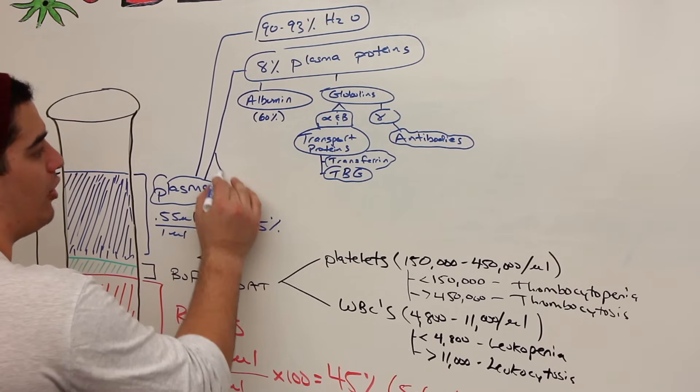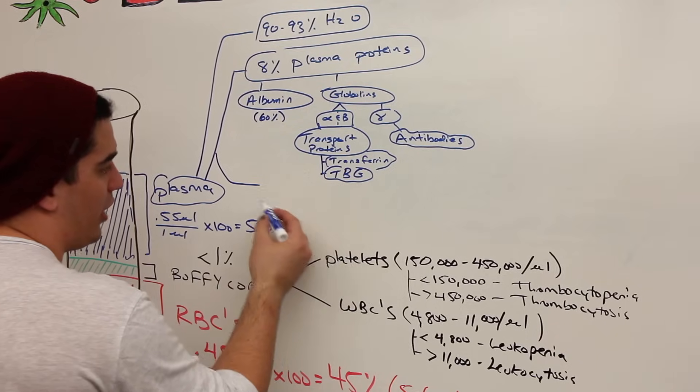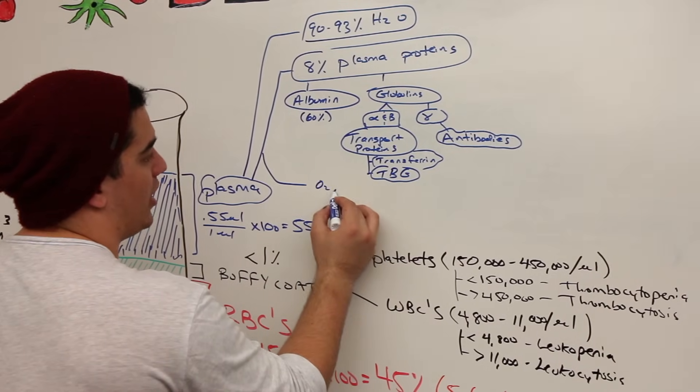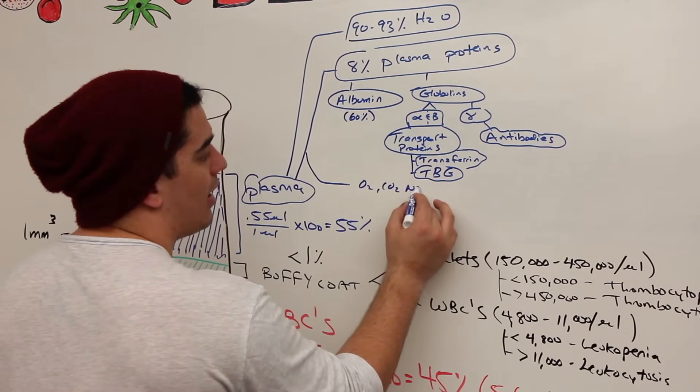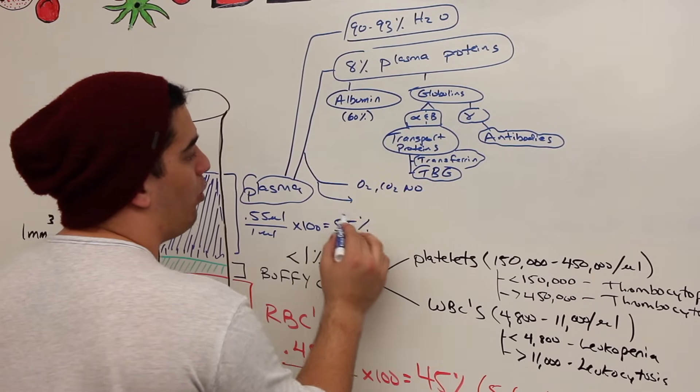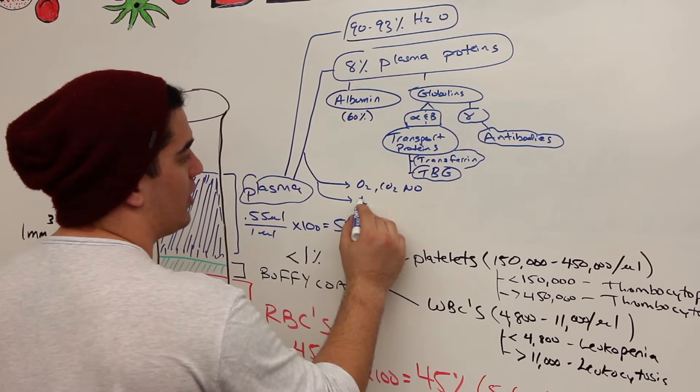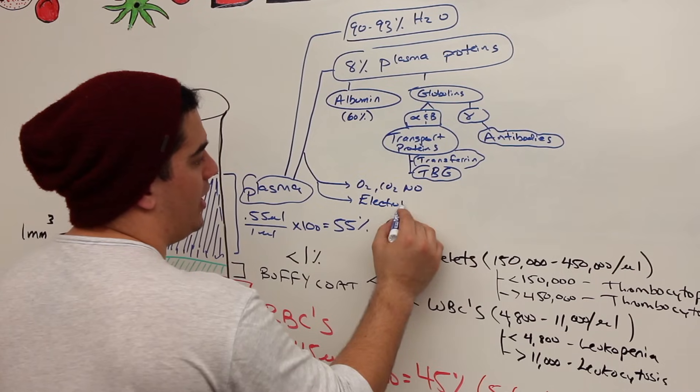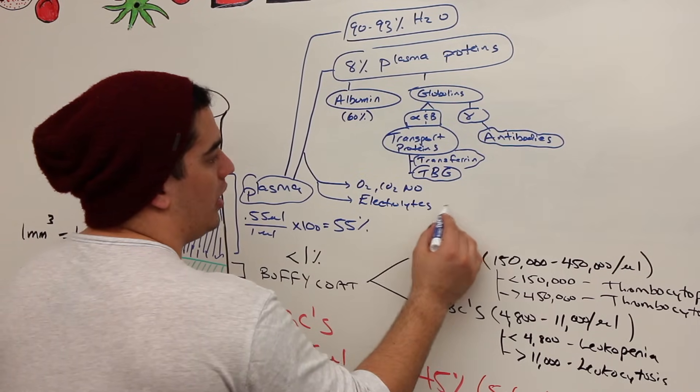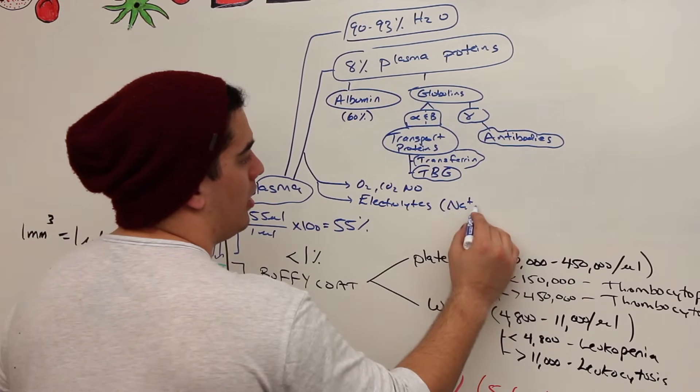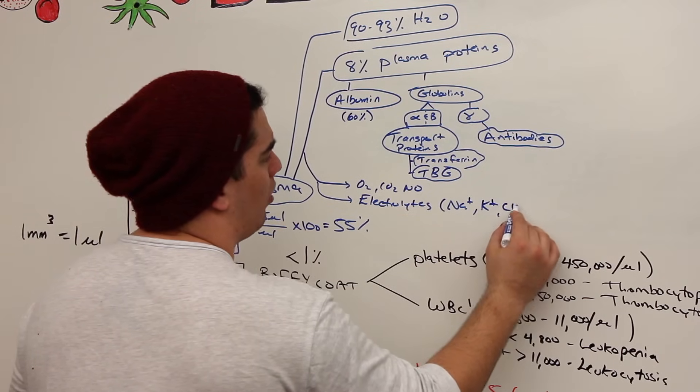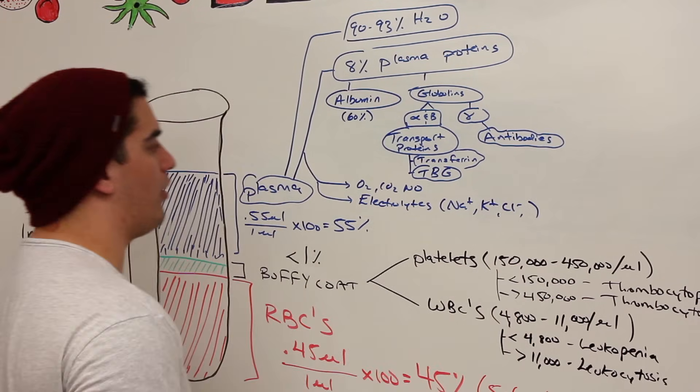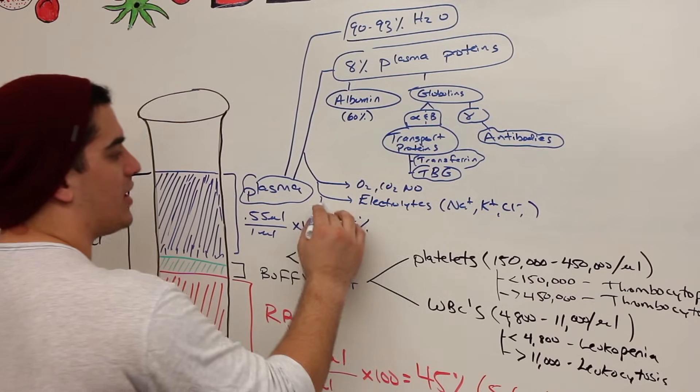The other things are kind of like what most people should know. It's going to transport respiratory gases like oxygen and CO2 and even nitric oxide. It's going to transport electrolytes. What are these electrolytes that it transports? This could be like sodium, potassium, chlorine, and we could just keep going on and on and on.